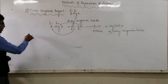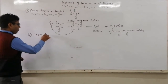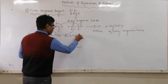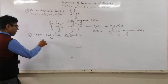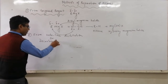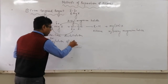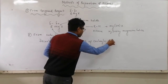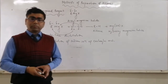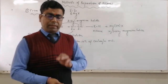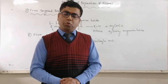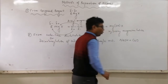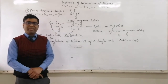Now the next one, number six, is from soda lime distillation — it is also called decarboxylation of sodium salt of carboxylic acid. This is an important one. In this method, as a reagent we will be using soda lime. Soda lime is a mixture of NaOH and CaO — a mixture of sodium hydroxide and calcium oxide is called soda lime.